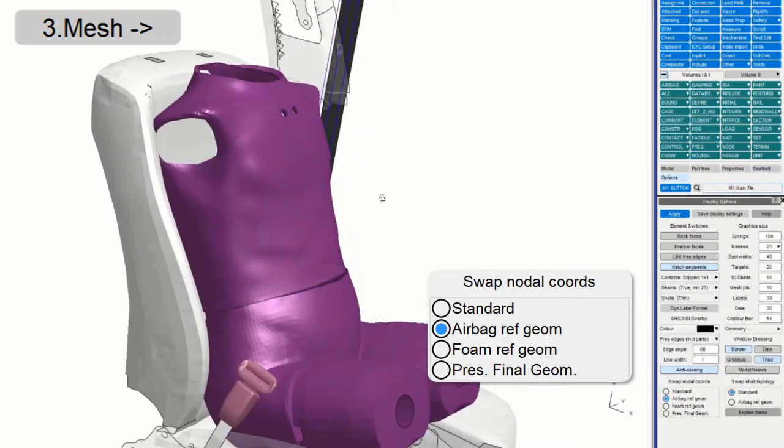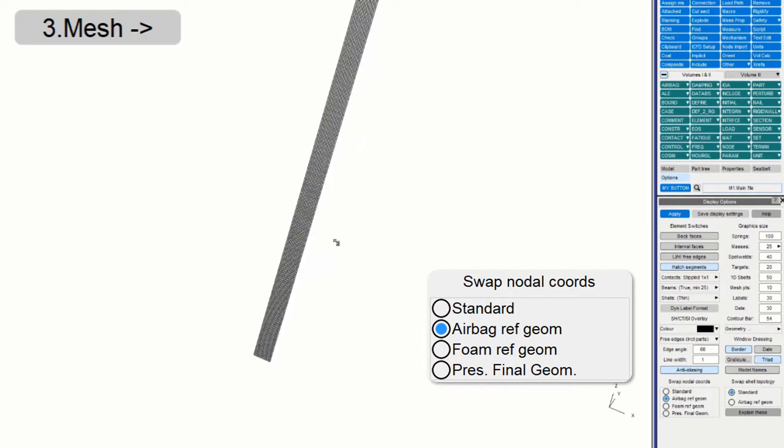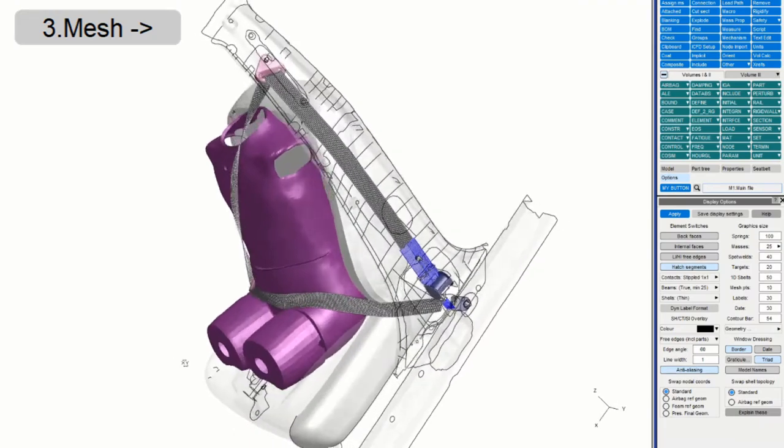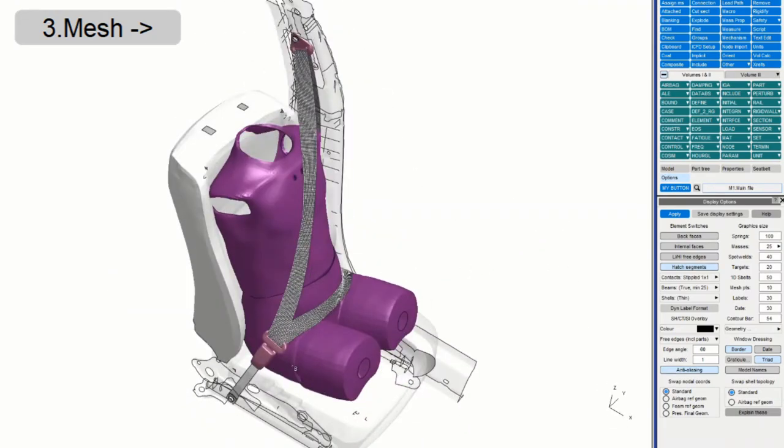Let's take a look at the reference geometry. This lets us remove initial stretch and distortion during the analysis. So, there we have it, a complete fitted shell belt.